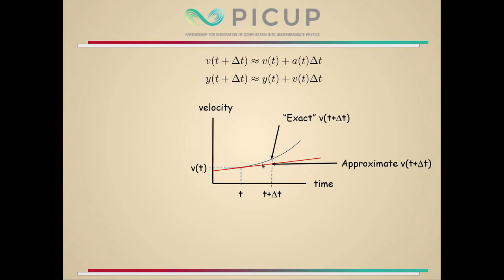This is a pretty good visual representation of the importance of keeping Δt small. If Δt is small enough, that red line pretty well matches that curve. That's going to be the essence of any of these computational approximations: Δt has got to be small. You might even chant that as you're learning this stuff — delta t must be small. How small does Δt have to be? That is something we have to grapple with, and as we go through some examples later, we'll demonstrate just how to assess the error and how small Δt really has to be for given situations.